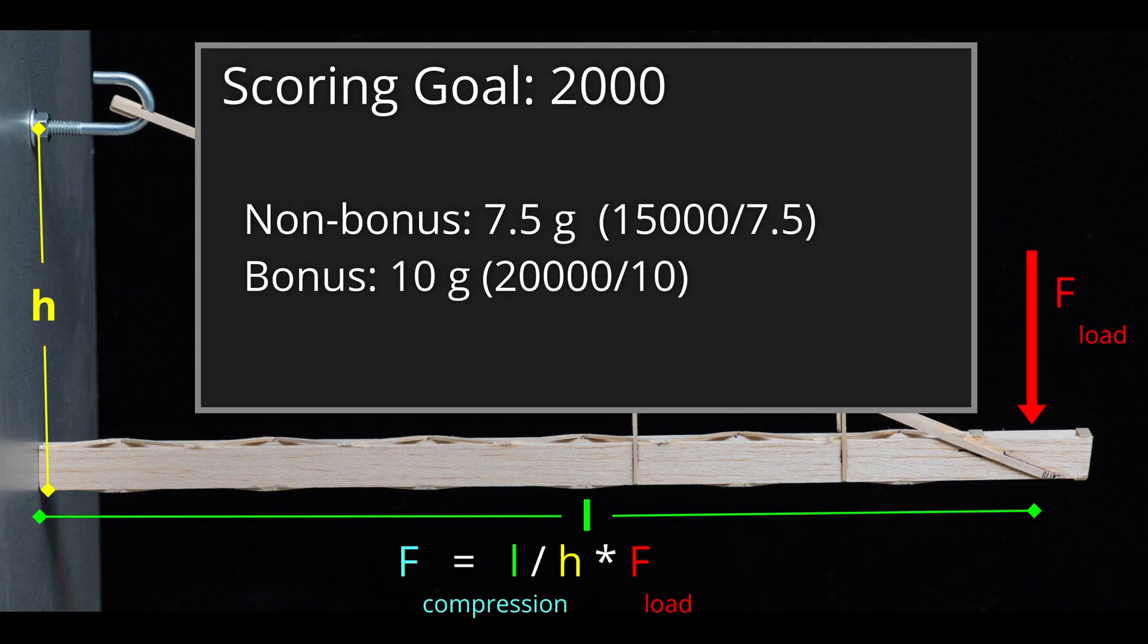To give a concrete example, say you wanted to have a competition score of 2000. You could either create a 7.5 gram non-bonus Boomi that held 15 kg or you could achieve the exact same score by having a 10 gram bonus Boomi that held 15 kg.